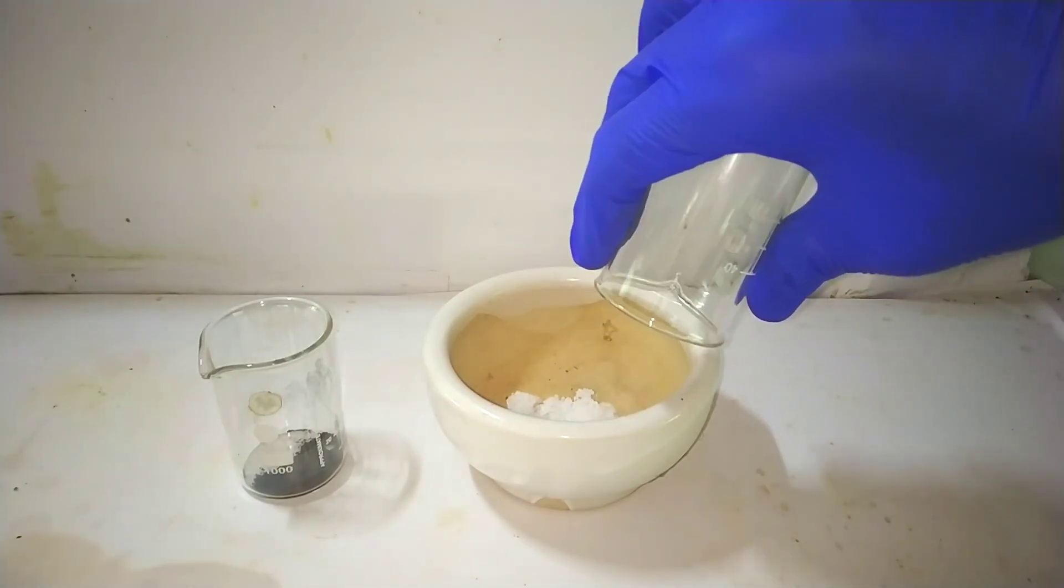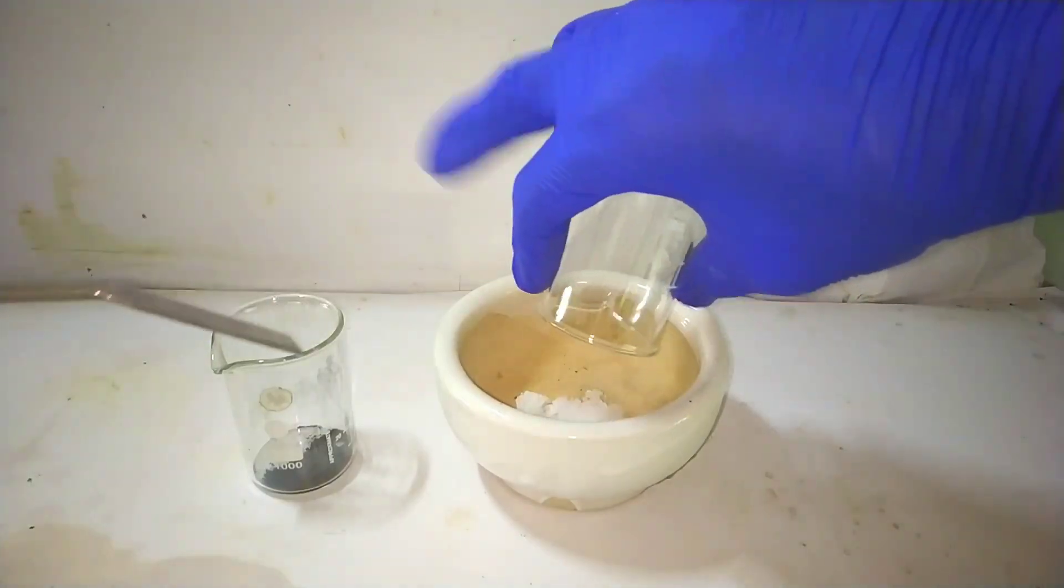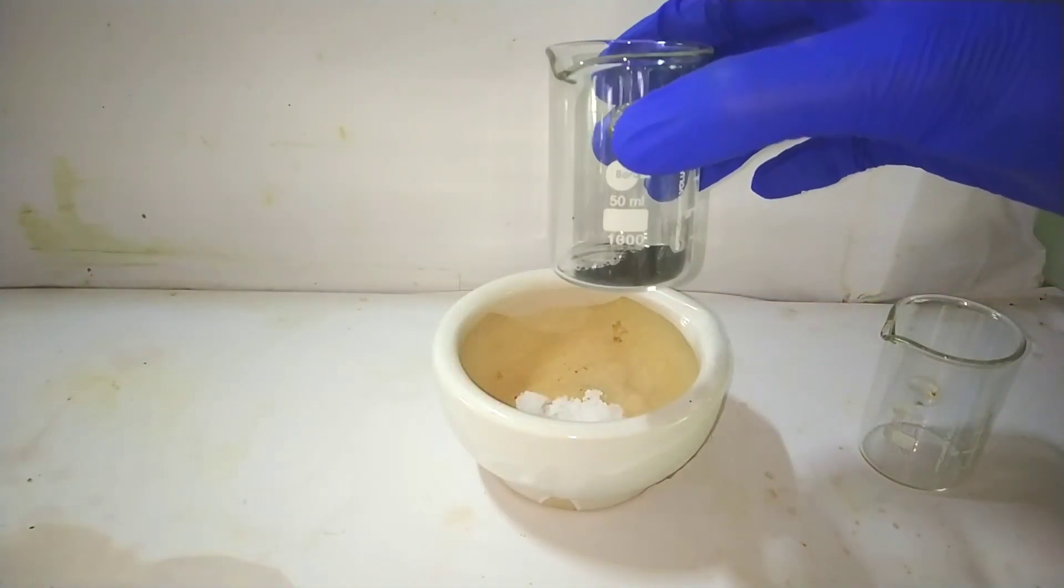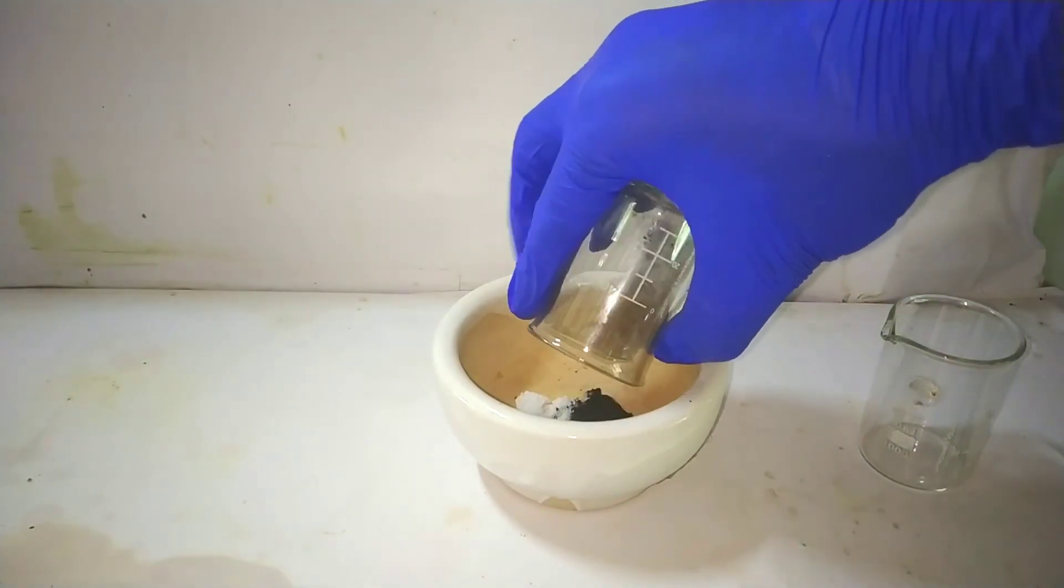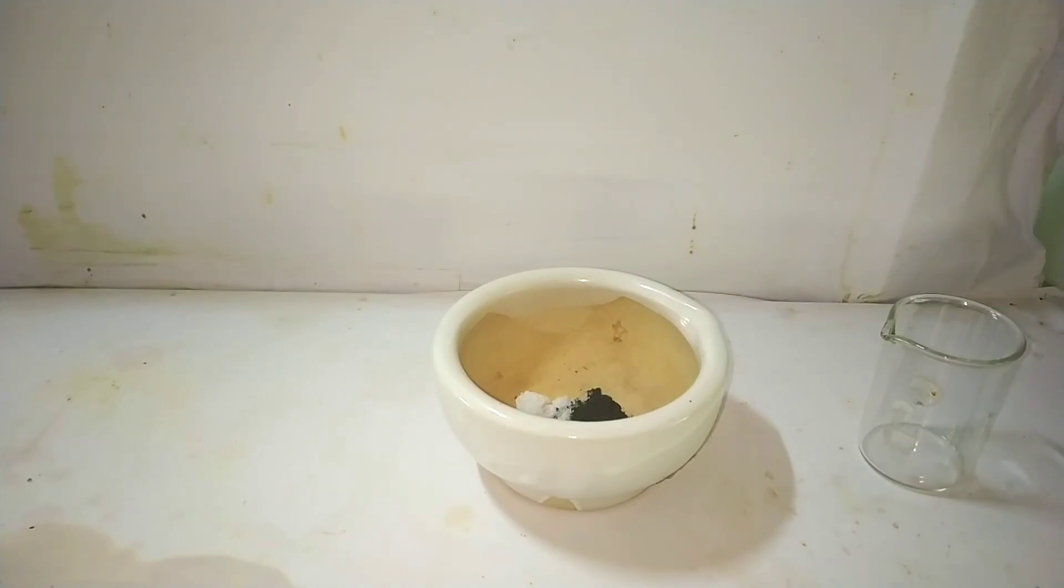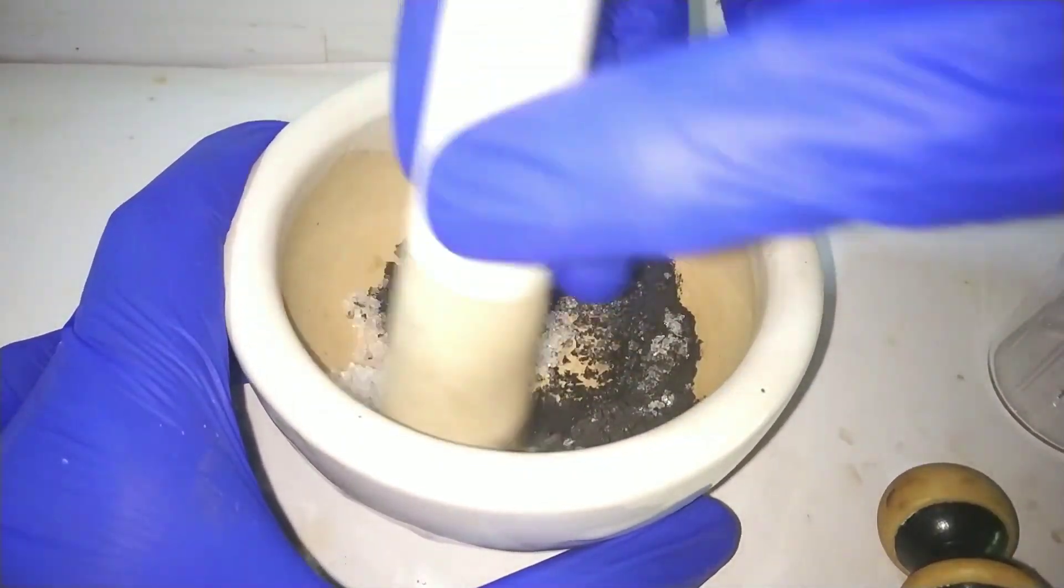We start by taking the pre-weighed 9.3 grams of ammonium dihydrogen orthophosphate and 2.3 grams of manganese dioxide together in a mortar. Ammonium dihydrogen phosphate was prepared by reacting ammonium carbonate with stoichiometric amounts of orthophosphoric acid, and manganese dioxide was extracted from batteries.